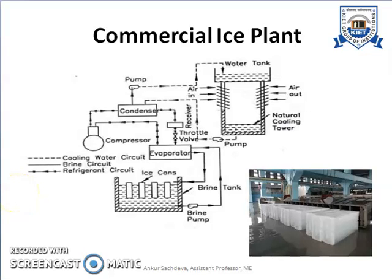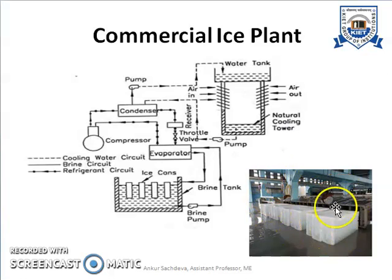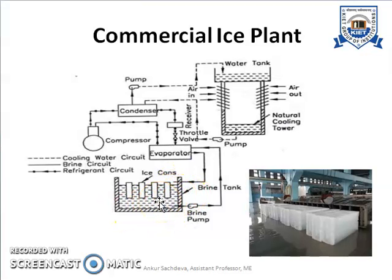Here, as you can see, we have a schematic diagram of the commercial ice plant. At the bottom, we can see a large storage tank where the ice cans are kept. From this ice can, we have the ice in the form of large slabs coming out. As you can see from the picture on the right-hand side, we have large blocks of ice coming outside from the cans. These cans are kept in a large tank inside which we have the brine solution. The level of the brine inside this storage tank is greater than the level of the water kept inside the cans, which contains the potable water required to be converted into ice.